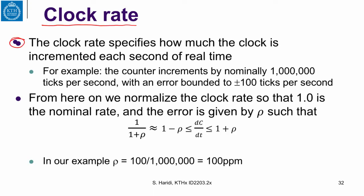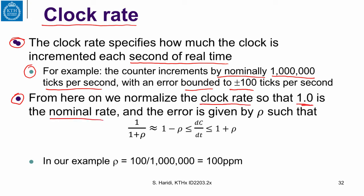Let us understand what clock rate is. A clock rate specifies how much the clock is incremented each second of real time. For example, the counter increments by nominally 1 million ticks per second — that is the nominal frequency — with an error bound of, say, plus or minus 100 ticks per second. From here on, we normalize the clock rate so that 1 is the nominal rate: if the clock ticks 1 billion ticks per second, the clock rate is 1.